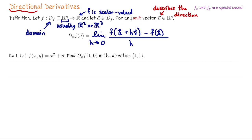It's important here to use unit vectors. If you set this calculation up and v is not a unit vector, you'll get a different answer. So by agreeing that we all use unit vectors to measure the rate of change in a particular direction, we standardize our calculation. So if you and I both want to calculate the rate of change of a function as we move to the east, we want to get the same answer.